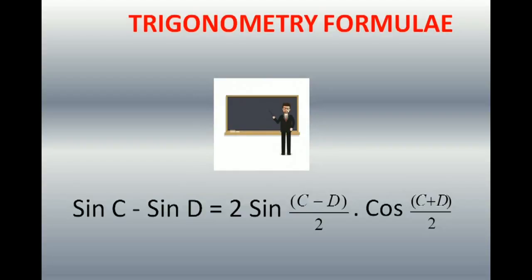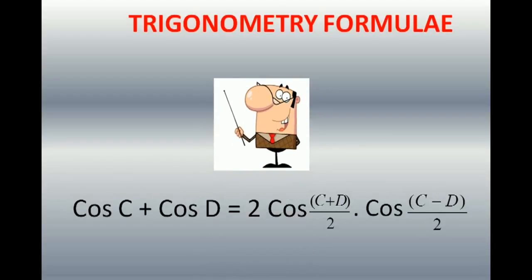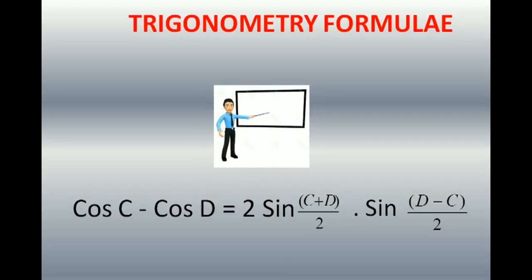For cos C + cos D, as I said, both cosines will be together or both sines together in the formula for cos. So cos C + cos D is 2 cos((C+D)/2) · cos((C−D)/2). Cos C − cos D — both sines are here — gives 2 sin((C+D)/2) · sin((D−C)/2).